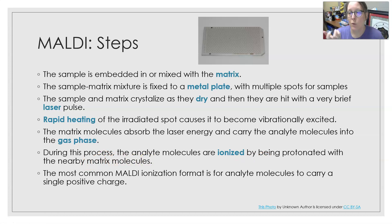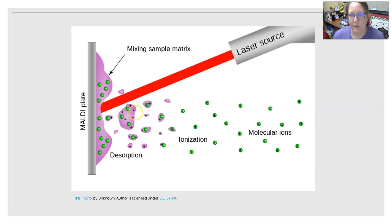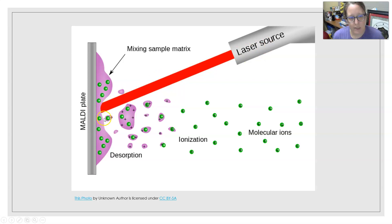During that process, the analyte molecules are ionized by being protonated with the nearby matrix molecules — the matrix molecules are what's getting charged and helping the molecules go into the gas phase, and as that's happening, the matrix molecules are donating the charges — the protons — to the molecules of the sample. The most common MALDI ionization format is for an analyte molecule to carry a single positive charge. In the graphic, the matrix (shown in pink) is mixed with the sample (green dots), hit with a laser, rises off the plate into a gas phase, donates protons to the sample molecules, and the sample molecules become charged or ionized and enter the mass spectrometer.